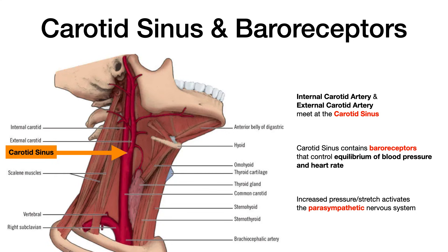That's what shows up on exams most often as it relates to carotid sinus hypersensitivity. But the opposite is also true: if the baroreceptor senses not enough stretch or not enough pressure, the feedback mechanism will alternatively activate the sympathetic nervous system to increase cardiac output.